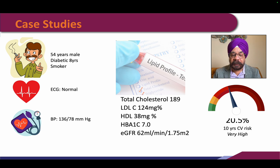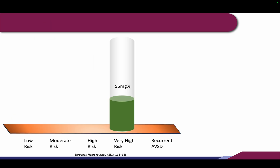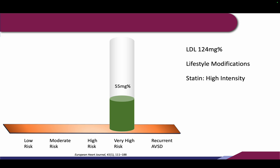In a very high risk or high risk category, the LDL target should be less than 55. His current LDL is 124, so we are looking for about a 40 to 50 percent reduction in LDL cholesterol. This can be helped by lifestyle modification, but we need to start a high intensity statin — rosuvastatin 20 mg or atorvastatin 40 mg — to achieve up to 50 percent reduction.